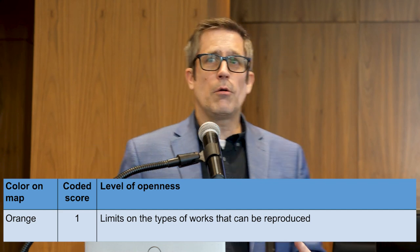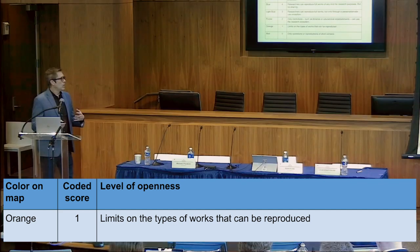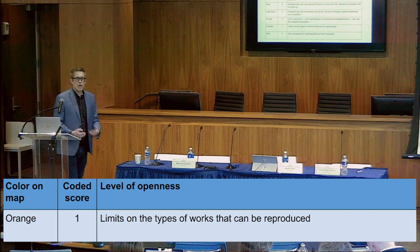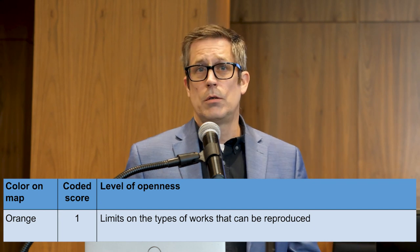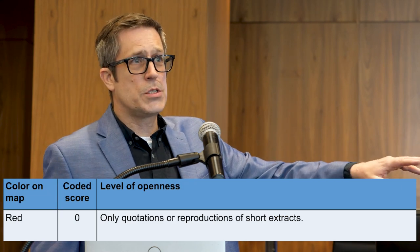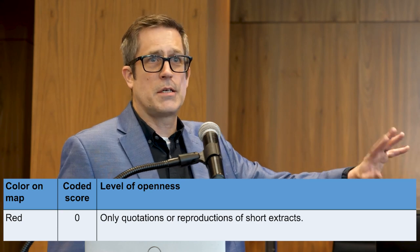Orange, or what we call 1, is becoming very restrictive. 1 says you can make a reproduction, but there are limits on the type of works. There are different ways that laws phrase it — often it says you can make a reproduction but you can't copy a full book, which we think is important for text and data mining. Sometimes it'll say literary but not artistic, and so that could be a problem. A lot of the laws in our set have some sort of limitation on the type of work that the law applies to. And then 0, or red, is the other extreme — you can't do legal copying for text and data mining. Often the only semi-relevant provision might be a quotation right, and there may also be restrictions on the amount of work you can copy, either a percentage or a number of words. Anything that makes it so practically you couldn't run text and data mining operations — that's red.